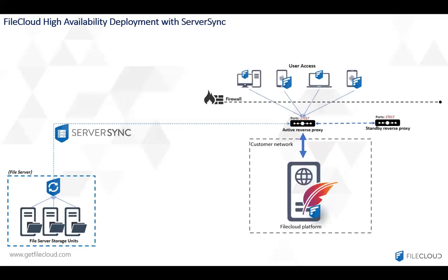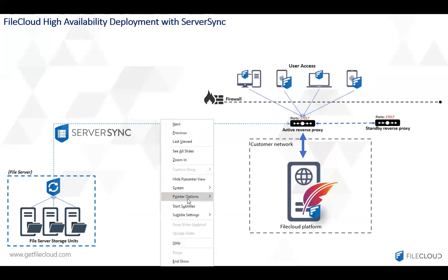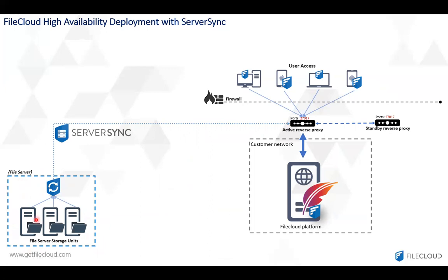So how it works: we have a local Windows file server that is synchronized with a FiCloud server using the server sync application. On the local Windows file server, you have data and permissions. The server sync application will synchronize both into the FiCloud platform, specifically to a team folder. The permissions are also synchronized into what's called granular permissions inside FiCloud. Off-site users will be able to access the data through the FiCloud team folder with the same NTFS permissions that you have on your Windows file server.